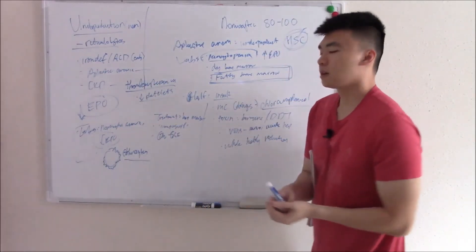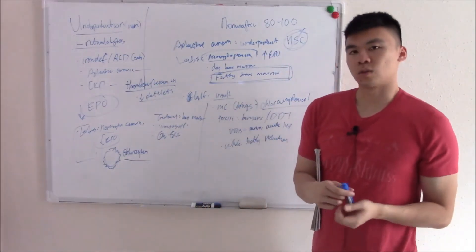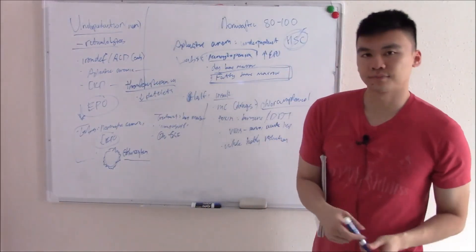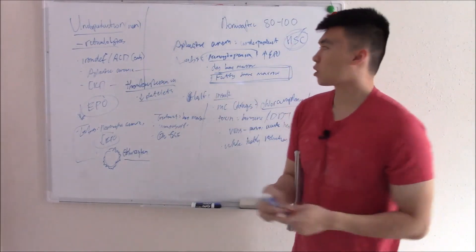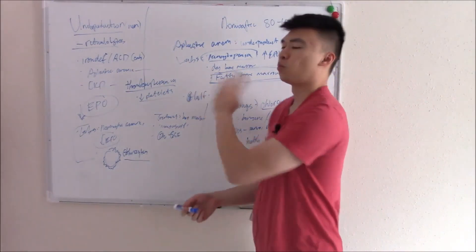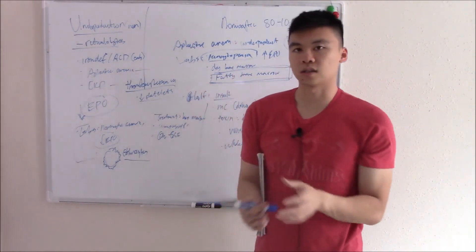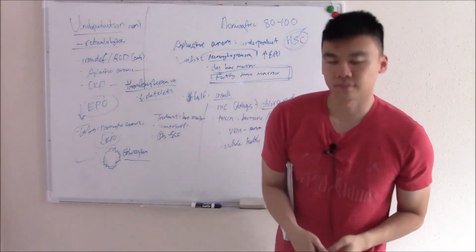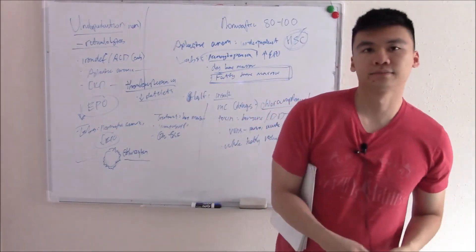That covers this portion of normocytic anemias. The next portion will discuss what causes destruction of red blood cells. See you next time.